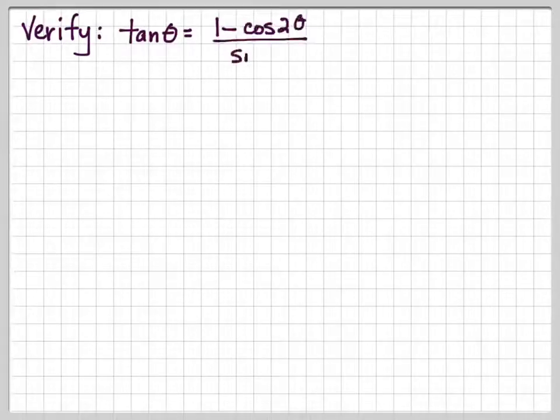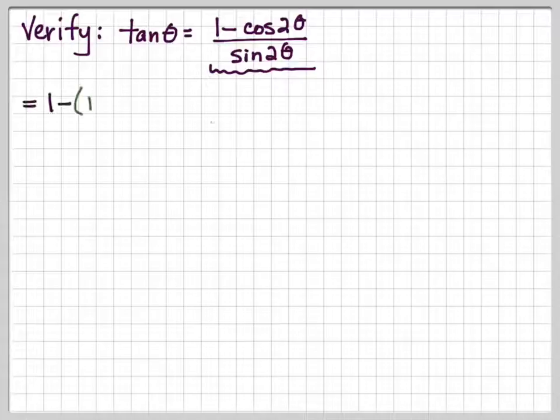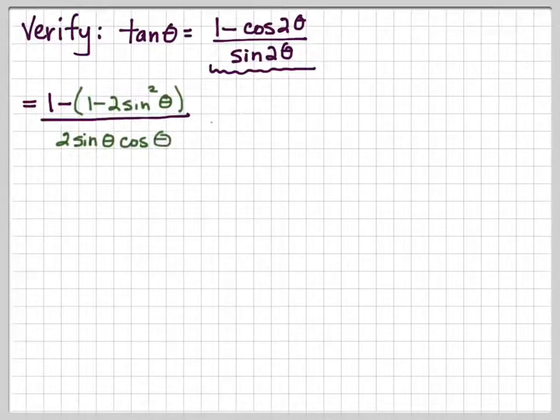All right, we want to verify that tan θ = (1 - cos 2θ)/(sin 2θ). So I'm going to change this to 1 minus—and cos 2θ is 1 - 2sin²θ—over 2 sin θ cos θ. So I change cos 2θ to 1 - 2sin²θ, and sin 2θ to 2 sin θ cos θ. And you can see I've done that in green for you.